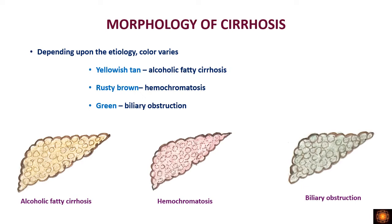In some conditions, by seeing the color of the liver we can tell the cause. If it has a more yellowish tinge, it might be on the background of alcoholic fatty liver. If it is rusty brown, there may be hemochromatosis. If the cirrhotic liver has a greenish tinge, it is because of biliary obstruction.